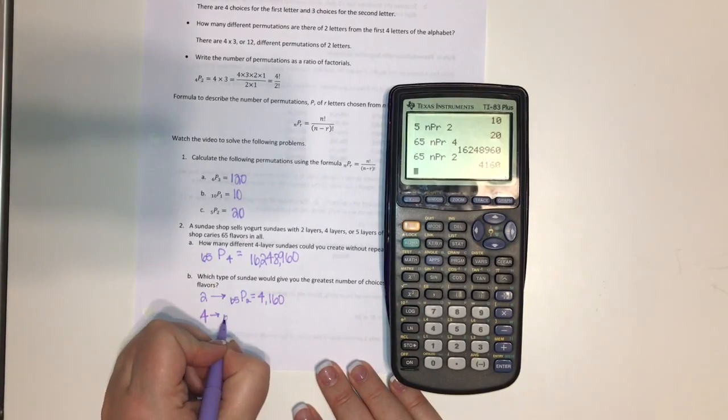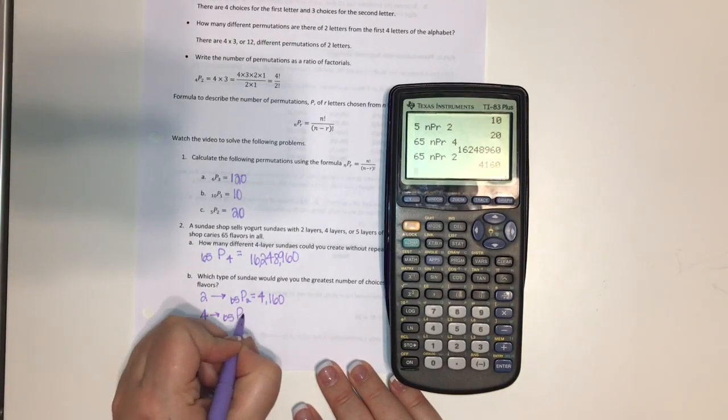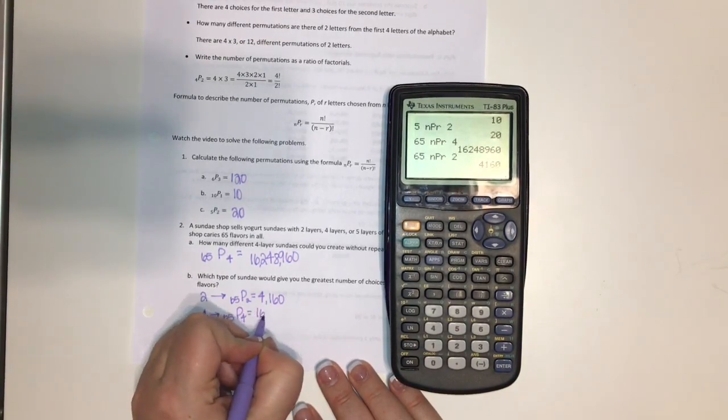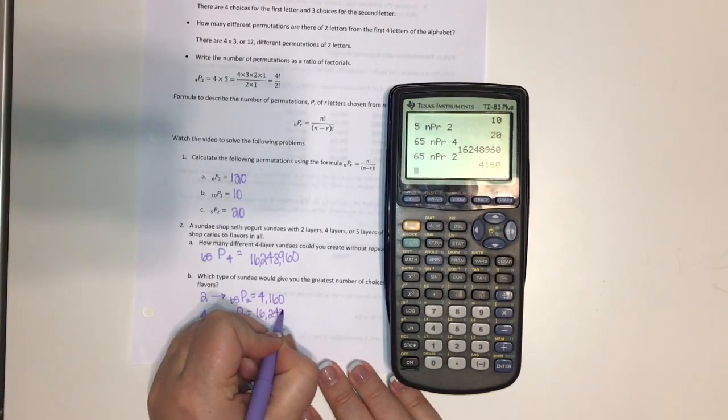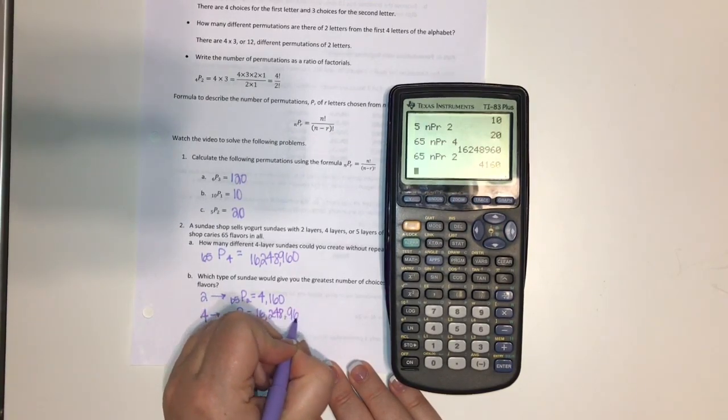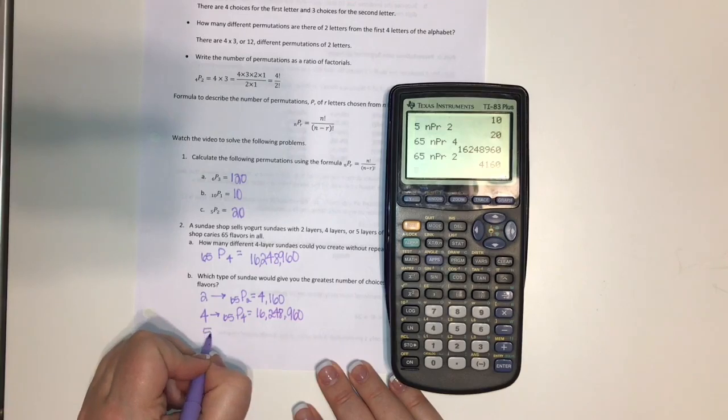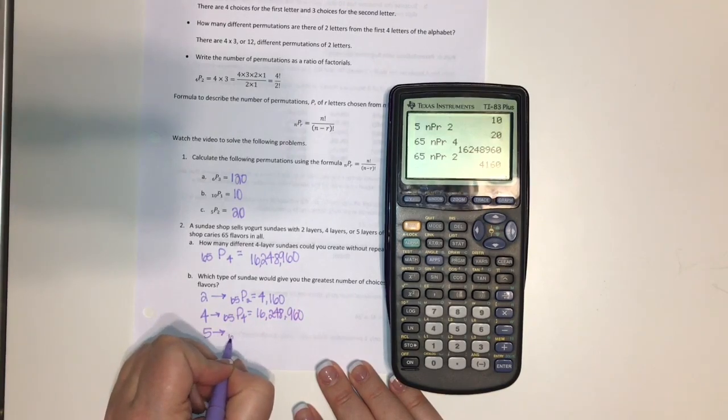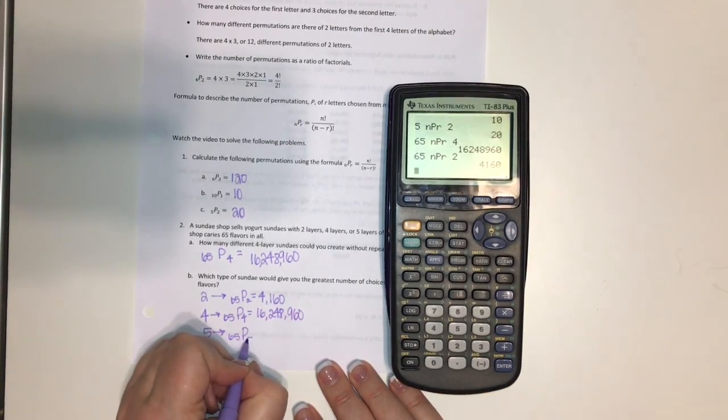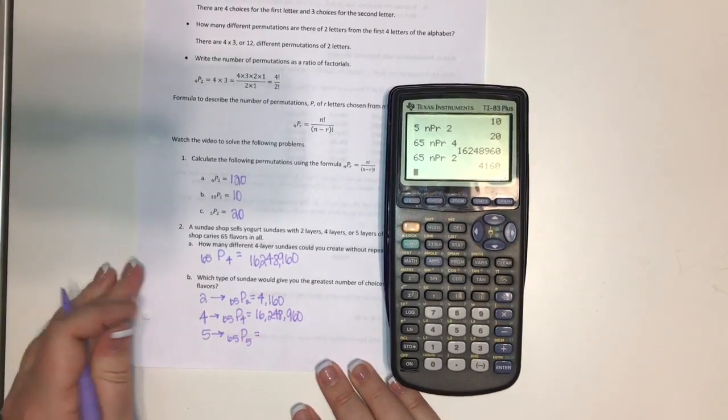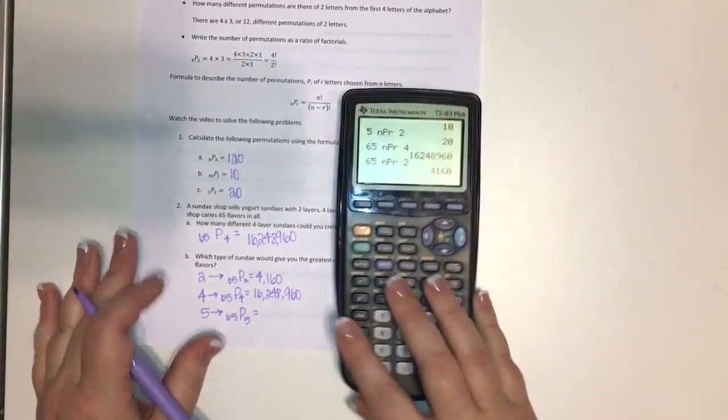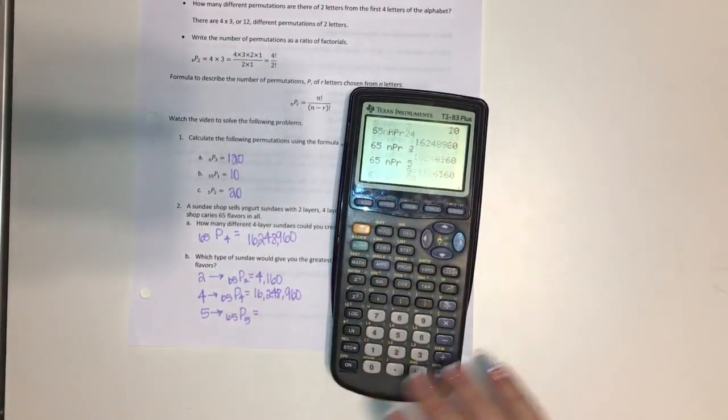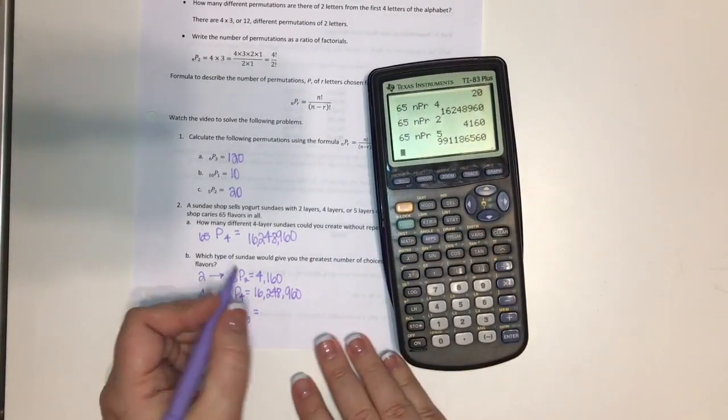Our four-layer sundae, well, we just solved that one. We have 16,248,960 options. And our five-layer sundae, which I think is kind of the obvious choice here, but let's just go ahead and figure out how many options that gives us.